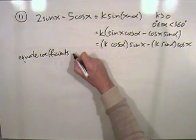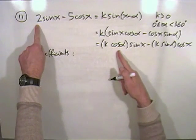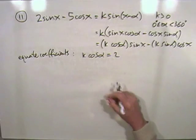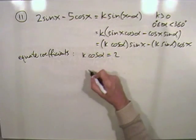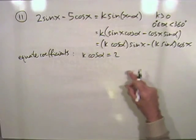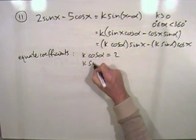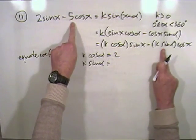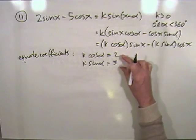The technique for solving this is to equate coefficients, strictly speaking to equate the corresponding coefficients term by term. If you equate the coefficients, starting with the sine x, I've got that k cos alpha must equal 2. Equating the cos x coefficients, be careful here, they're both negative, so k sine alpha equals 5.